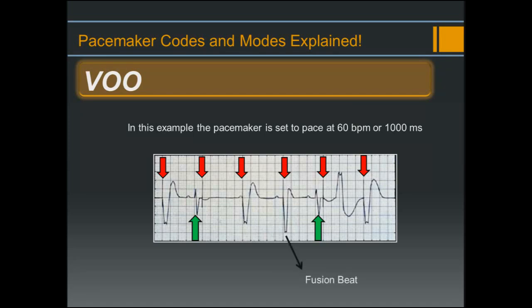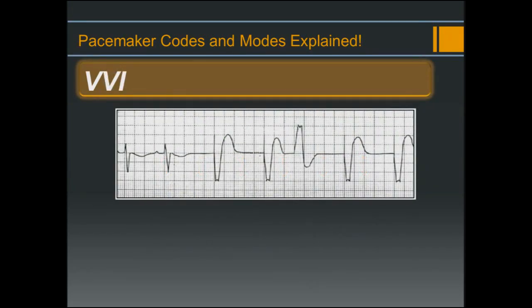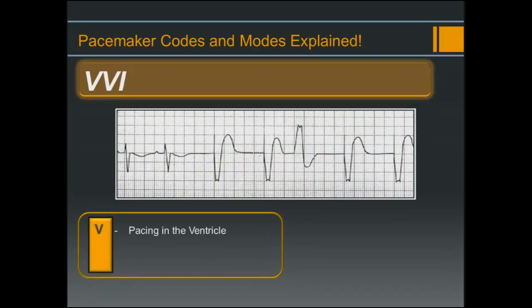On a side note, this fusion beat: the paced QRS is narrower than the rest. This is due to the combination of intrinsic conduction happening at the same time as a paced conduction, resulting in a fusion of the two conductive wavefronts. As a result, the fusion beat shows up as a narrower paced QRS.